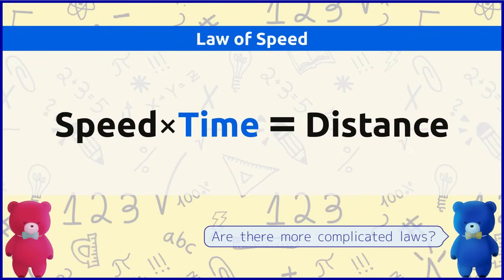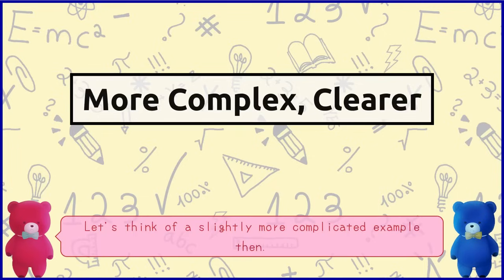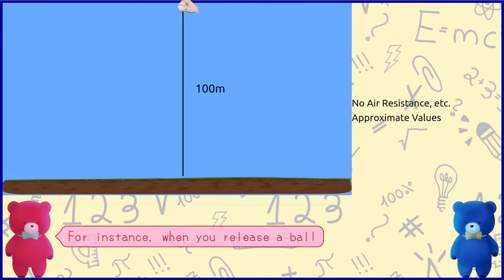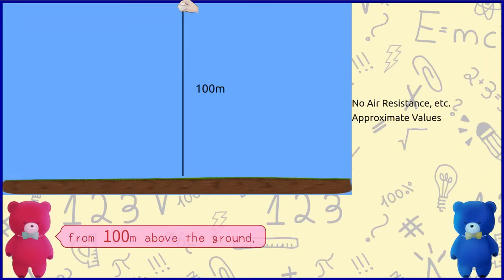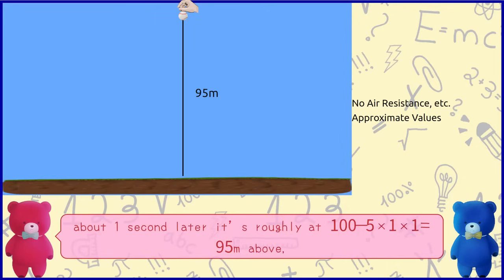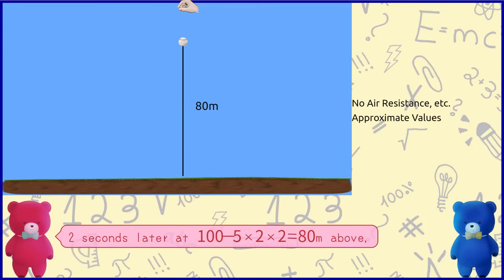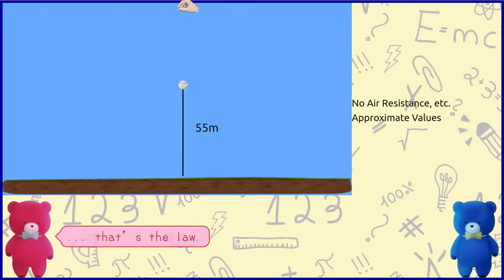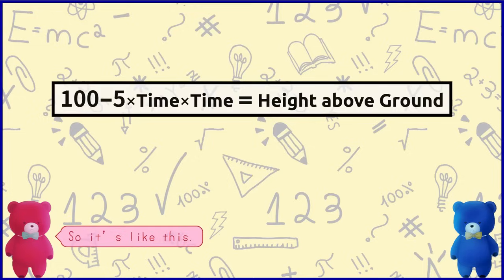Are there more complicated laws? Let's think of a slightly more complicated example. For instance, when you release a ball from 100 meters above the ground, about 1 second later it's roughly at 100 minus 5 times 1 times 1 equals 95 meters above; 2 seconds later at 100 minus 5 times 2 times 2 equals 80 meters above; 3 seconds later at 100 minus 5 times 3 times 3 equals 55 meters above. That's the law, so it's like this.